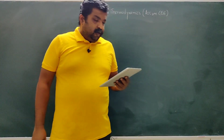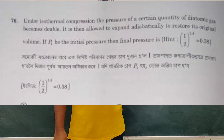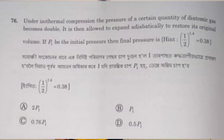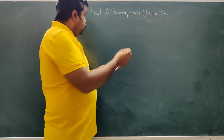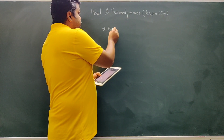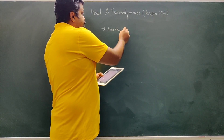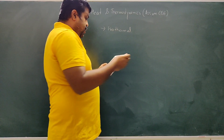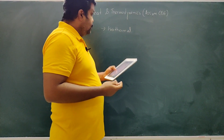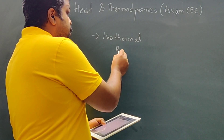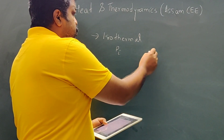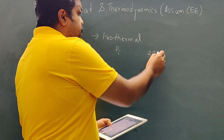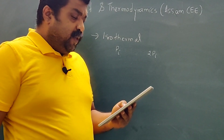The next question is Assam C 2019, on the topic of heat and thermodynamics. Under isothermal compression, the pressure of a certain quantity of diatomic gas becomes double. So the initial pressure is Pi and pressure doubles to 2Pi.